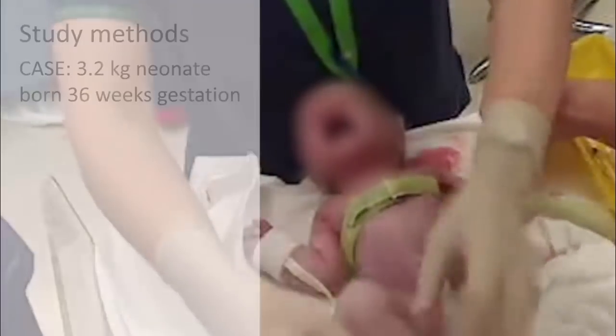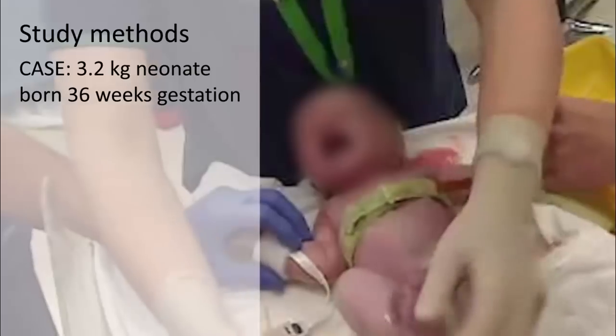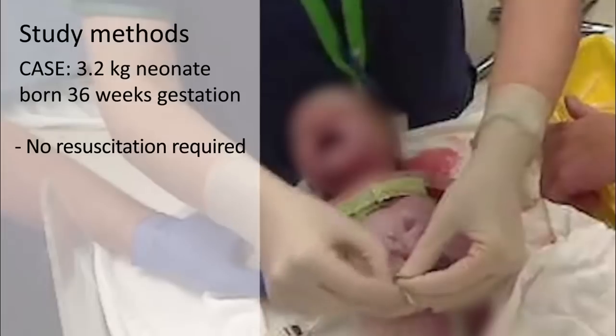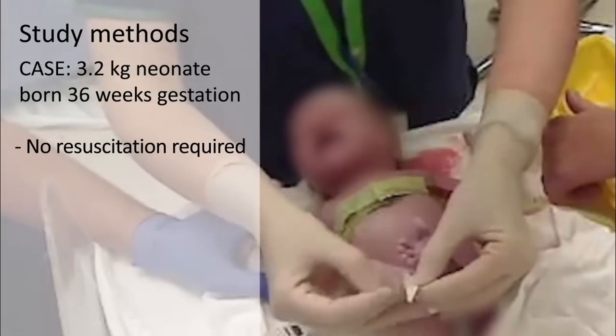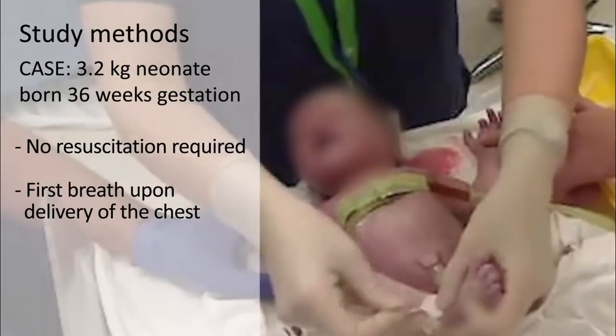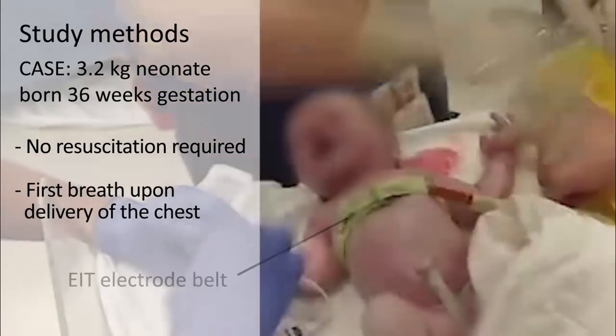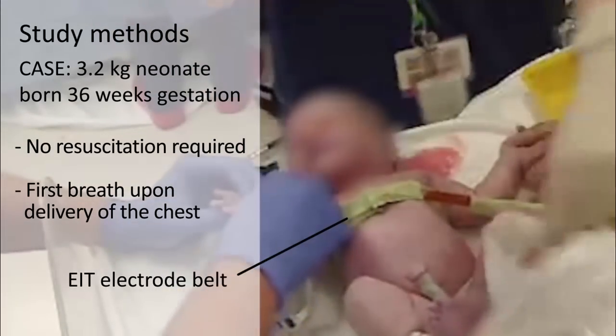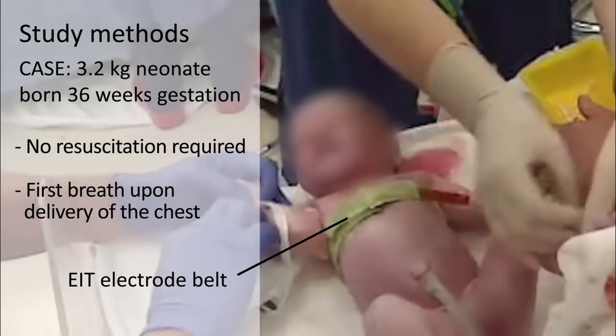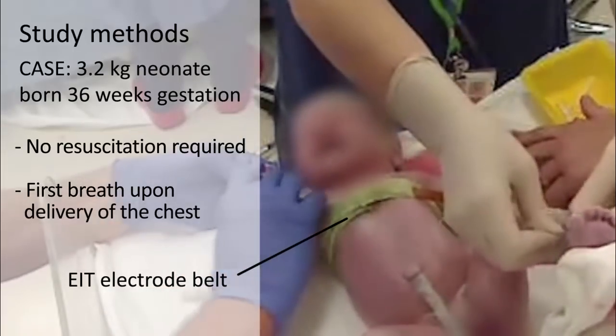Here the study methods can be seen in a 36-week gestation neonate who did not require any resuscitative interventions at birth. The first breath occurred on delivery of the chest. As the neonate was placed on the resuscitaire, a custom-built non-adhesive EIT electrode belt was placed around the chest and imaging immediately commenced. In this case imaging began at 22 seconds and continued for the first six minutes.